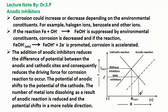The addition of anodic inhibitors reduces the difference of potential between the anodic and cathodic sites, and consequently reduces the driving force for the corrosion reaction to occur. The potential of the anode shifts to the potential of the cathode. The number of metal ions dissolving as a result of the anodic reaction is reduced, and the potential shifts in a more noble direction.